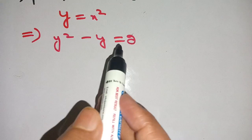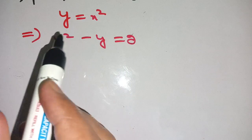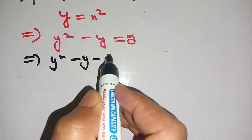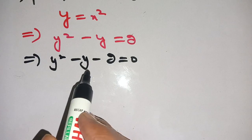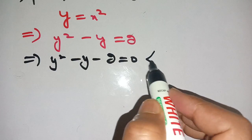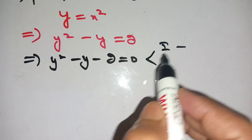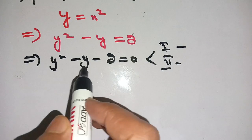Now, on shifting this 2 from right hand side to left hand side, we get y square minus y minus 2 is equal to 0. This is a quadratic equation and it has two methods: first method is breaking down the middle terms, and second method is by using the quadratic formula.